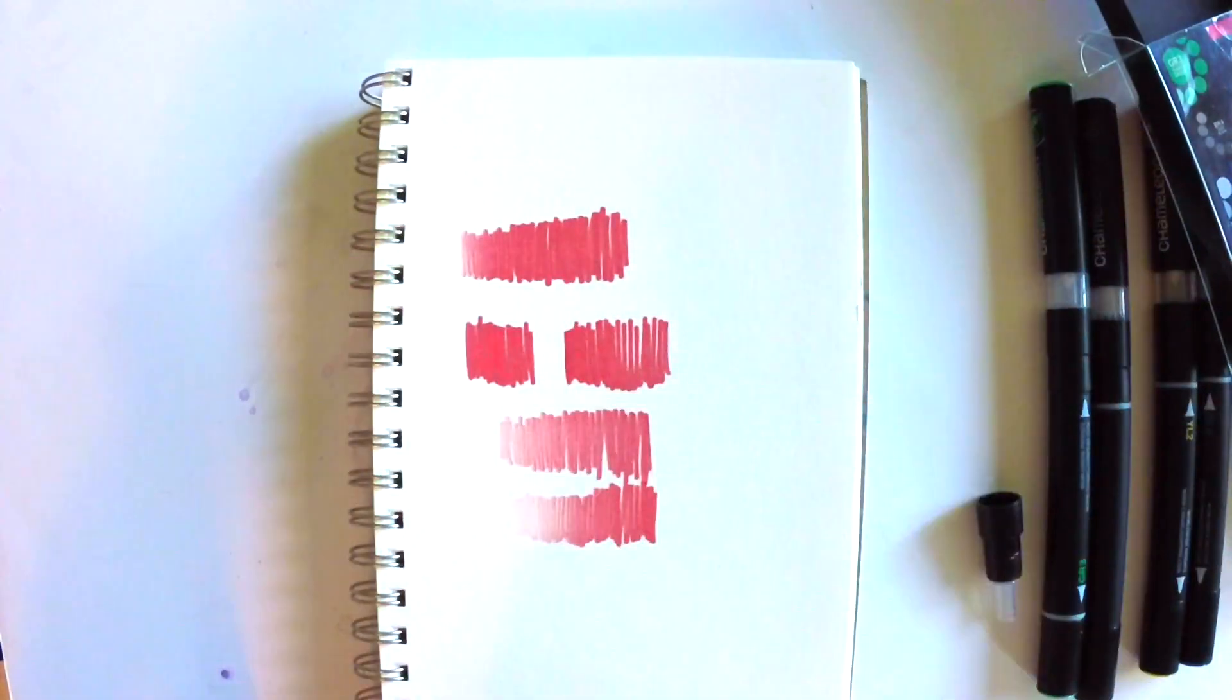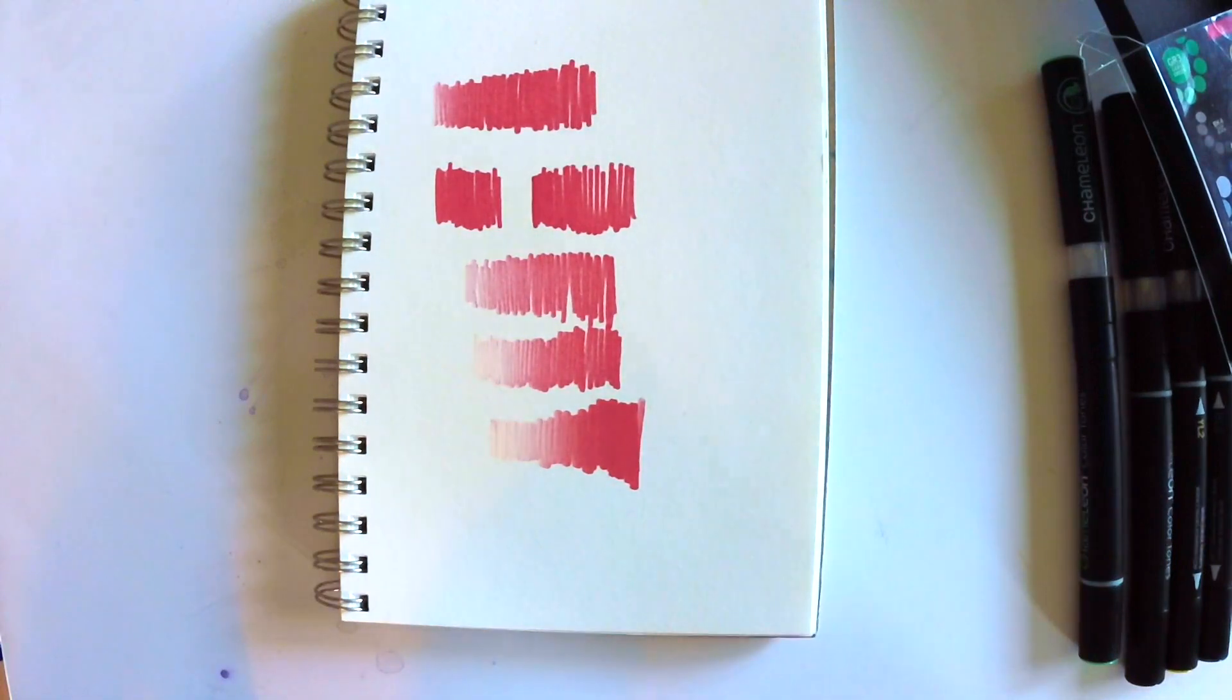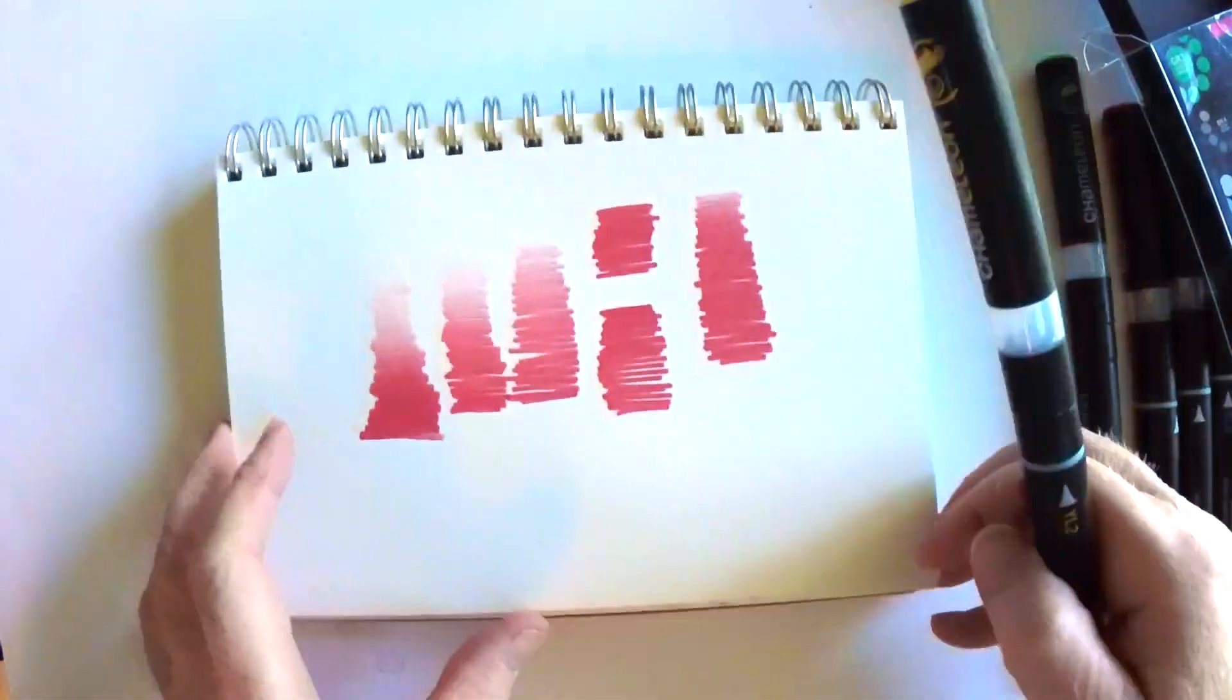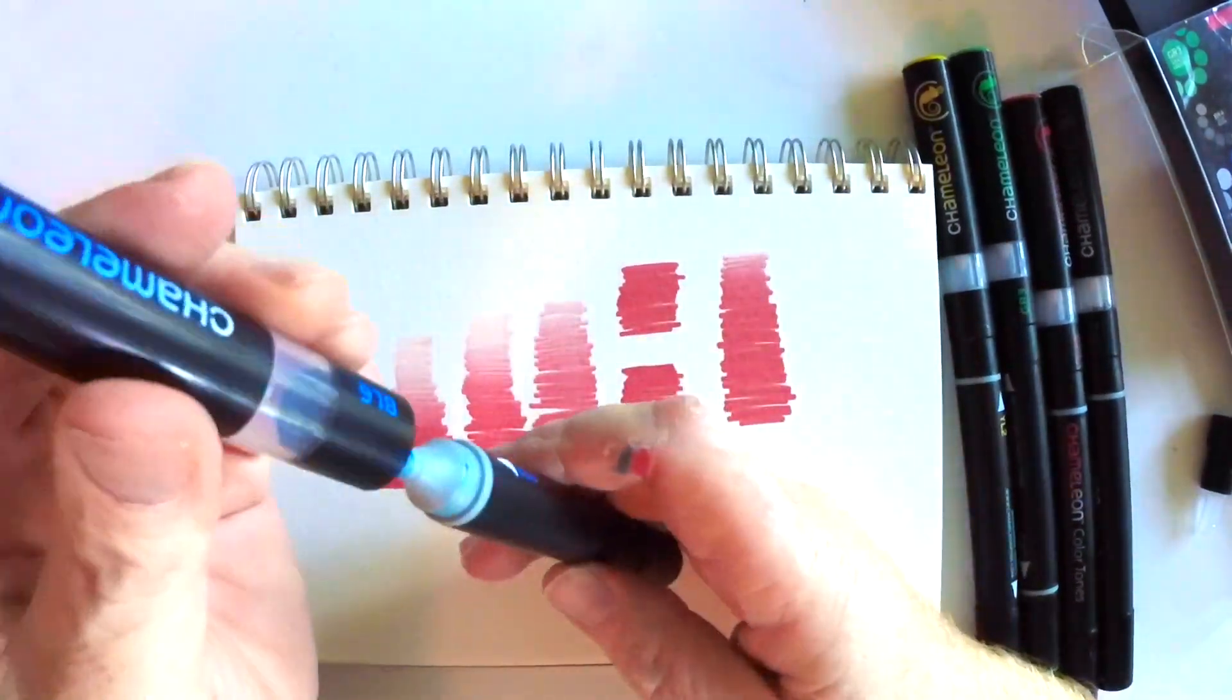See where it kind of fades it at the beginning there and takes the color out. Gradually the color gets stronger and stronger. Now the longer you leave the tip, the marker tip, connected to the toning nib in the mixing chamber, the lighter it will be when it starts out.